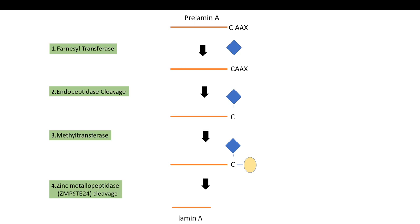After this endopeptidase cleaves, lamin A becomes separated from the inner nuclear membrane because the farnesyl group which acts as the lipid anchor is removed. Now lamin A functions from inside the nucleus. Now let's see what happens in HGPS.